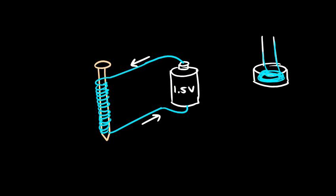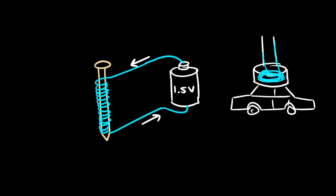It becomes really strong and it can pick up an old junk car just by magnetizing the roof of the car and sticking to it. They use that to move junk from one place to another in a junkyard.